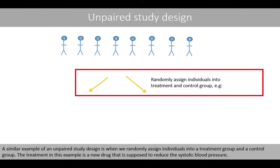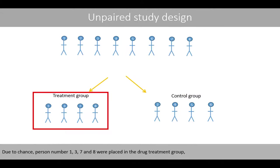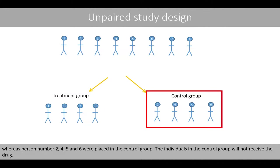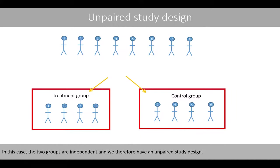The treatment in this example is a new drug supposed to reduce systolic blood pressure. Due to chance, persons 1, 3, 7, and 8 were placed in the drug treatment group, whereas persons 2, 4, 5, and 6 were placed in the control group. The individuals in the control group will not receive the drug. In this case, the two groups are independent and we therefore have an unpaired study design.